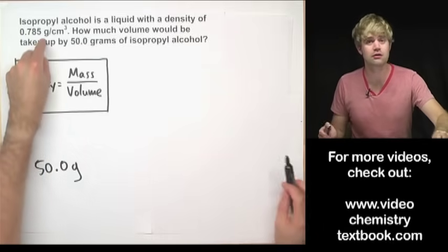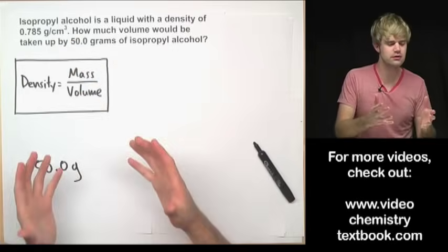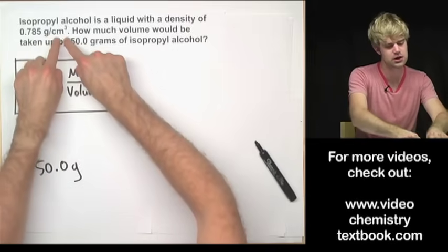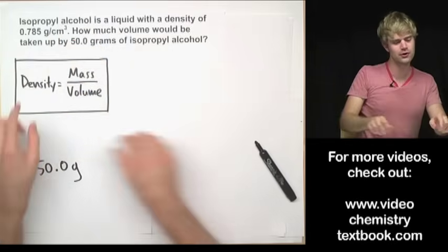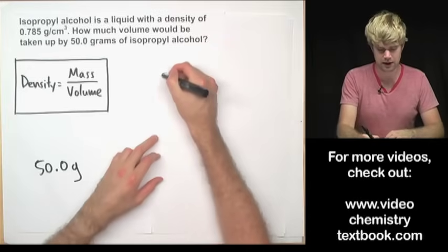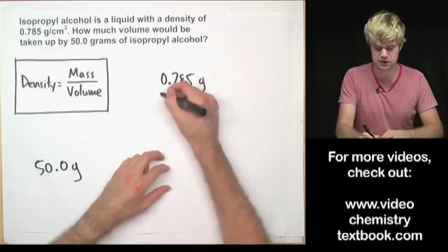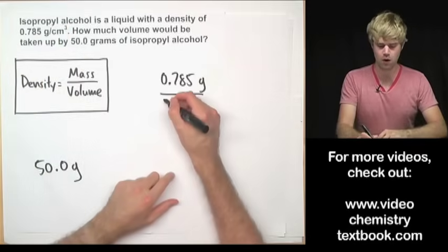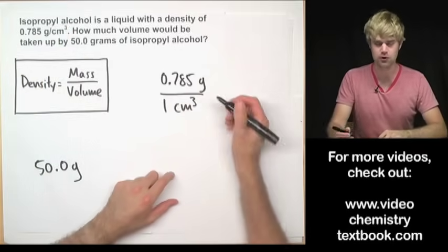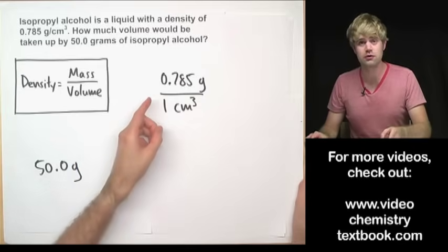So let's write the density as a conversion factor. As I showed in the previous example, we're going to take this centimeters cubed, we're going to grab it and we're going to pull it under the fraction. So we're going to get one conversion factor that looks like this: 0.785 grams divided by one centimeter cubed. That is one of the conversion factors.